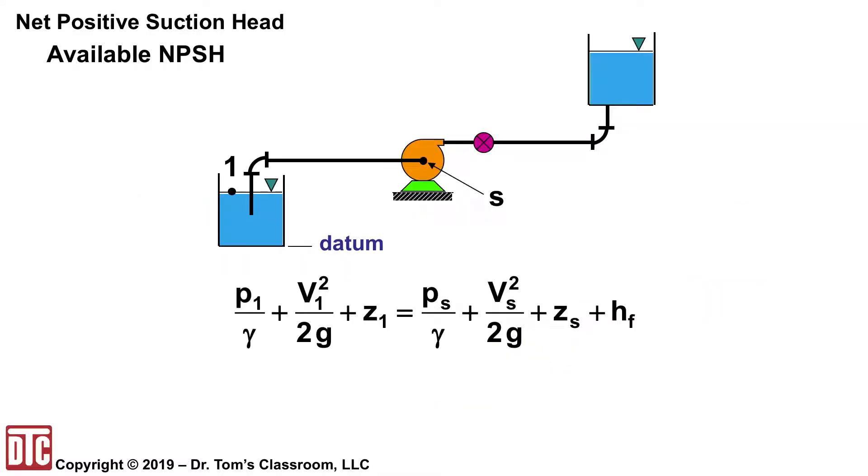So repeating the figure here and writing out Bernoulli at 1 has the P1 over gamma V1 squared over 2g plus Z1. And then the same information at the suction side PS over gamma V squared over 2g plus ZS. And then there's the loss of friction, friction loss for whatever the piping, the fittings, valves, anything like that between 1 and S is just lumped into HF, which could be major and minor combination of those.